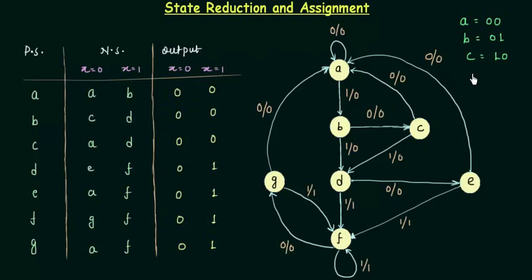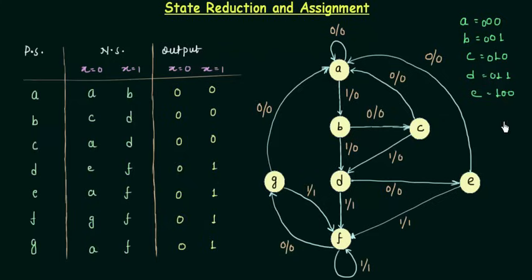If you have four states, say D, then it will be 11. If you have five states E, then use three bits for it, and E will be 100.